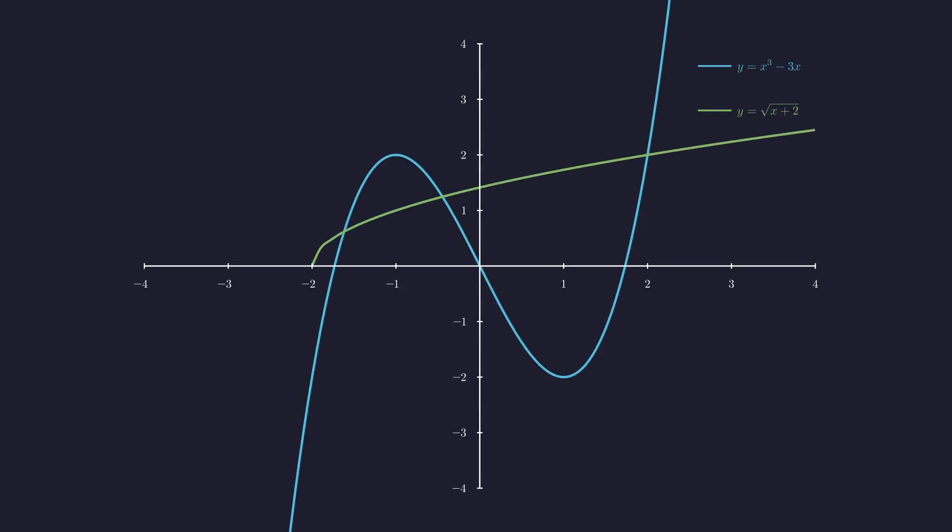Let me show you how perfectly our algebra matches the geometry. Here are our original functions. Look at that perfect alignment. Every solution we calculated algebraically lands exactly on an intersection point. What started as a cubic equation that seemed resistant to standard methods revealed its secrets through trigonometry, ultimately connecting us to one of mathematics' most famous constants, the golden ratio.